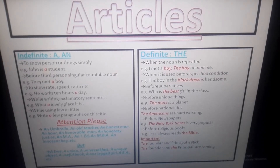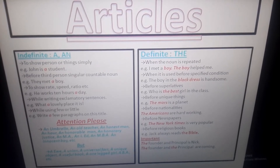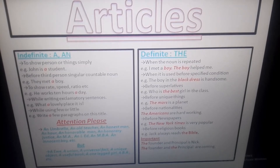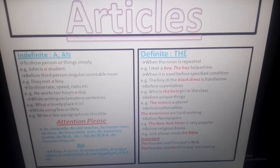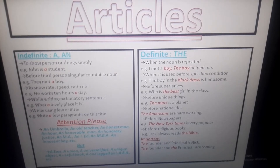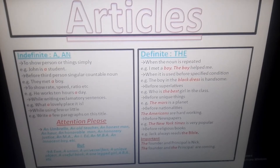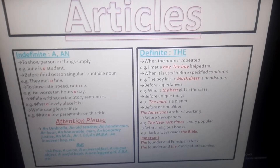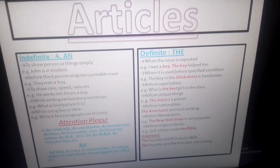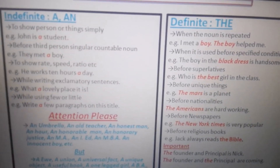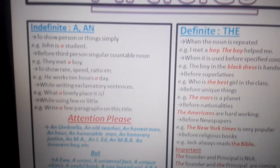Next: while writing exclamatory sentences, we use 'a'. For example, 'What a lovely place it is!' — you can see the exclamatory sign at the end. Next: while using 'few' or 'little', we use 'a'. For example, 'Write a few paragraphs on this title' — before 'few' and before 'little', we use 'a'.